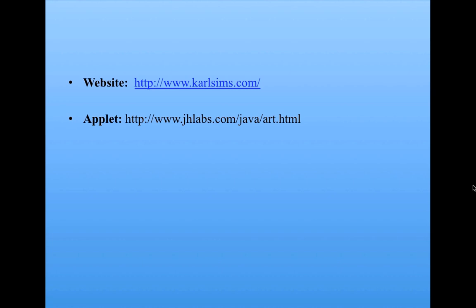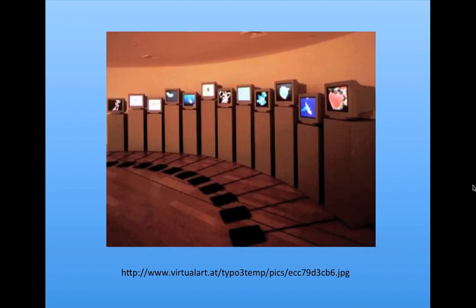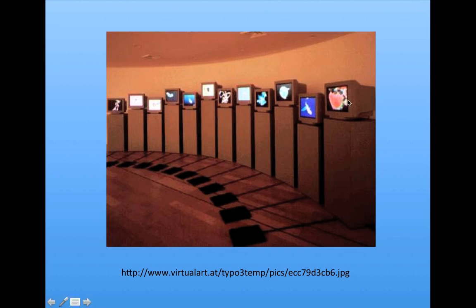One really interesting thing Carl Sims did was set up a museum exhibit at the Georges Pompidou Center in Paris, with a series of monitors each showing a different evolved picture. On the floor are sensors, and people in the exhibit can stand on them to select a picture they like. That picture gets chosen and evolved further via the genetic algorithm, perhaps mating with other chosen pictures. In this way, not just a single person but a whole group of people played the role of the selection algorithm.